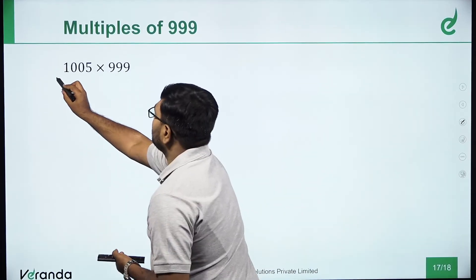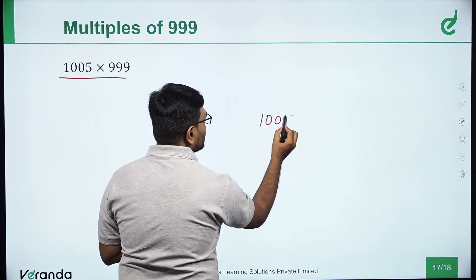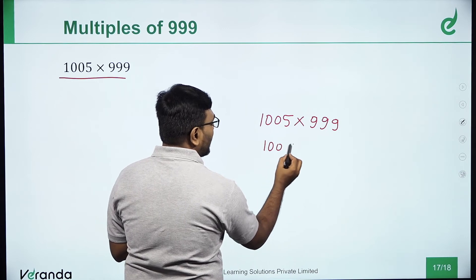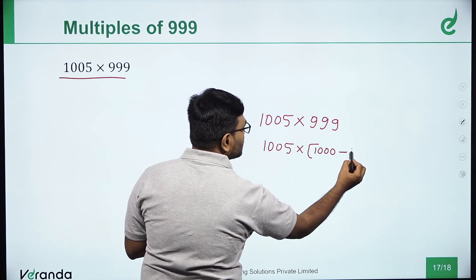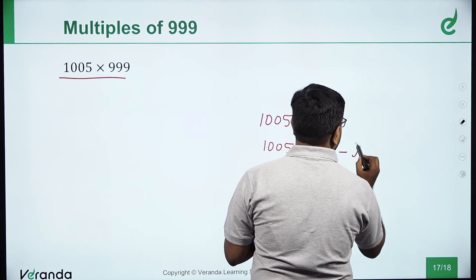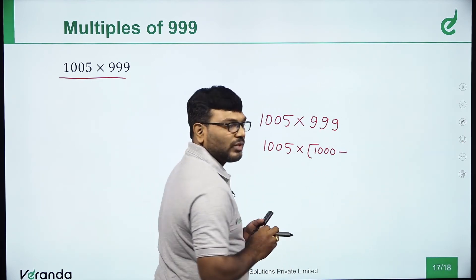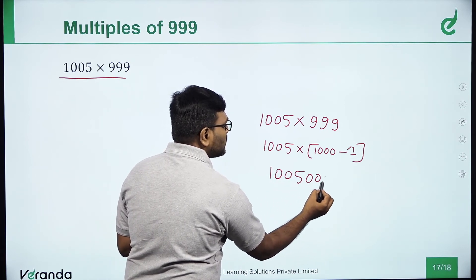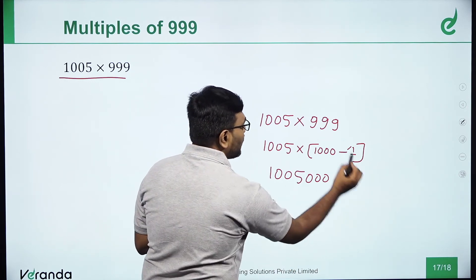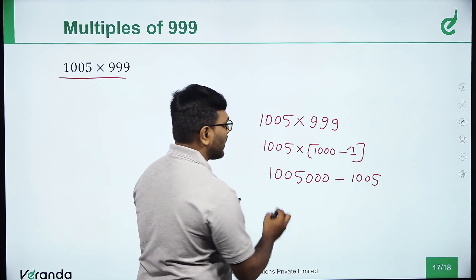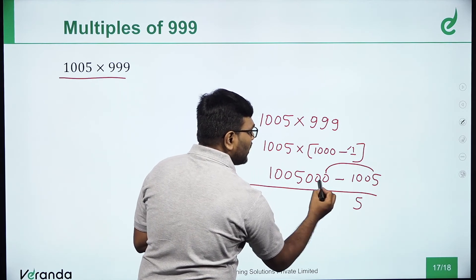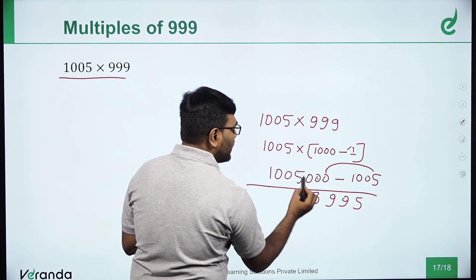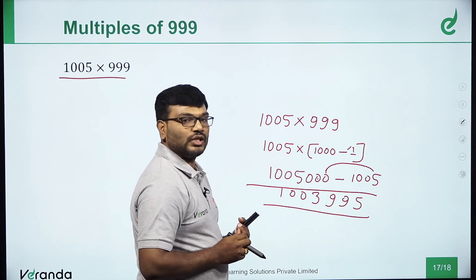Next question: multiples of triple 9. Example: 1005 into 999. We use the trick that 999 equals 1000 minus 1. So 1005 into 999 = 1005 into 1000 minus 1005. That is 1005000 minus 1005. Subtracting: 9, 9, 9, 4, 0, 0, giving answer 1003995. So the answer is 1003995.